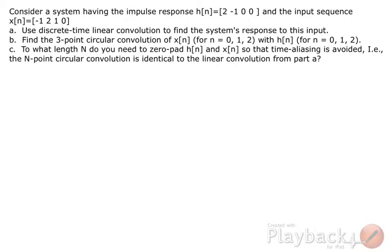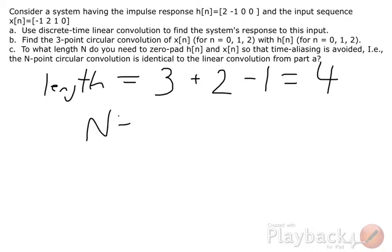we need to make sure that the circular convolution output is the same length or larger than our linear convolution result. So the length of a linear convolution is the length of each signal—x was three and h was two—that sum minus one equals four. So our n is four.